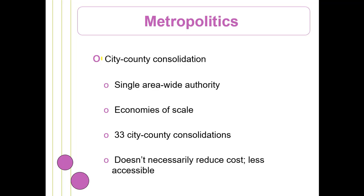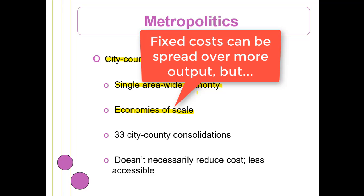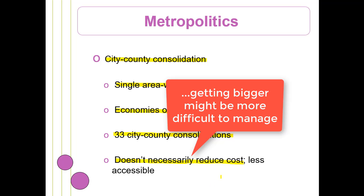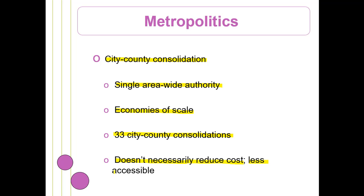There are some motivations to consolidate the city with the county, particularly if the city is large enough to take up pretty much the whole county. It might make sense to have a single area-wide authority where the jurisdiction of the county is the same as the city — just like any corporation seeking economies of scale. There are about 33 city-county consolidations in the United States, and it's still in experimental phases. It doesn't necessarily reduce costs and might make things less accessible if you're going through a larger entity rather than smaller subdivisional jurisdictions.